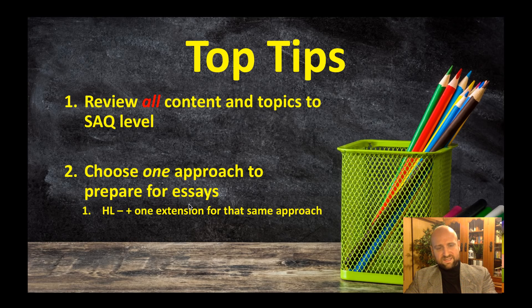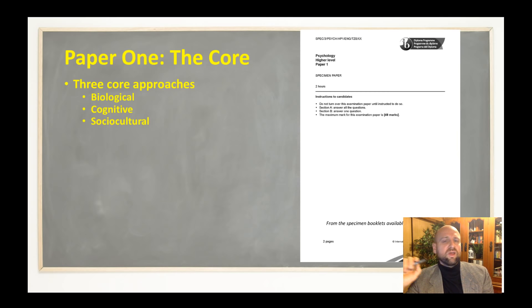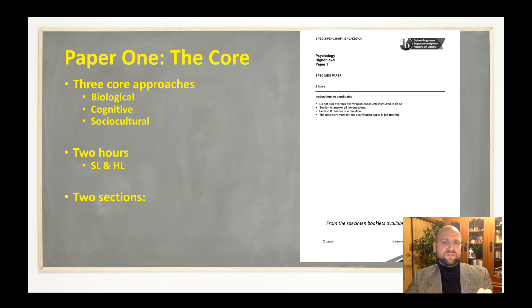Final summary: three core approaches — biological, cognitive, sociocultural. Options come in Paper Two. It's two hours. On the marking: the paper is worth 49 marks — 27 marks for Section A short answer questions and 22 for the essay. Slightly more marks for short answer responses, which is why Section A is the key to doing well in Paper One. Being well prepared to write excellent short answer responses is a really important step.